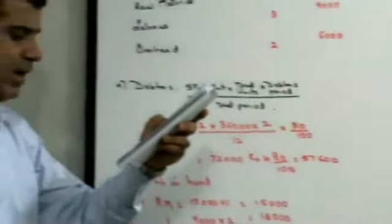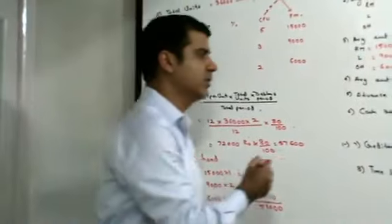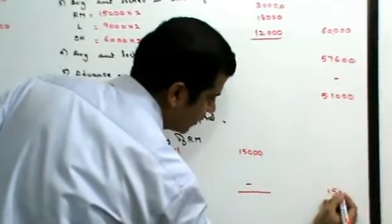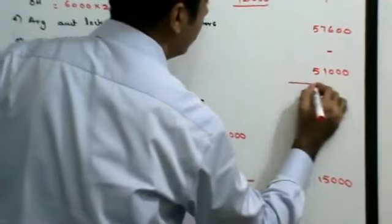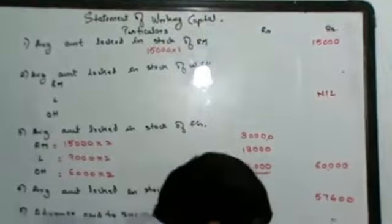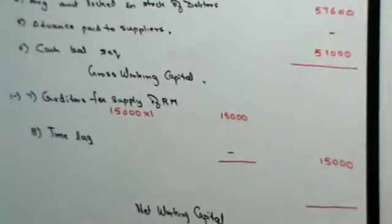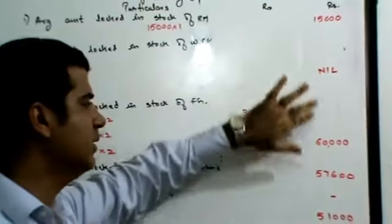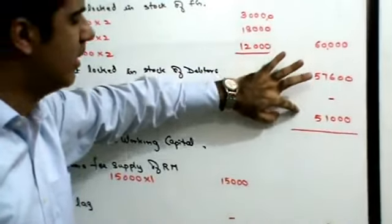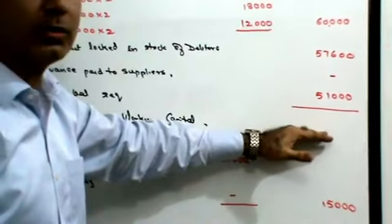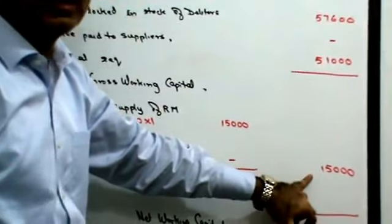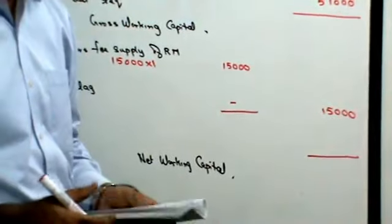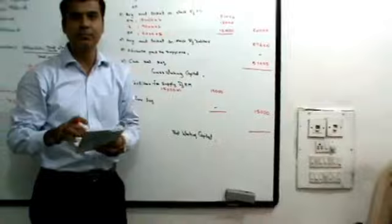This sum does not have any time lag or advance, so there is no advance paid to supplier. There is no time lag. So this 15,000 will come out here as it is. Now all you need to do is add these figures, subtract 15,000 from it, and that will give you your net working capital. So add 15,000, 60,000, 57,600, and 51,000. That will give you gross working capital. From that, you subtract 15,000. That will give you net working capital. I leave this addition for you all to do on your own. This finishes the sum. Thank you.